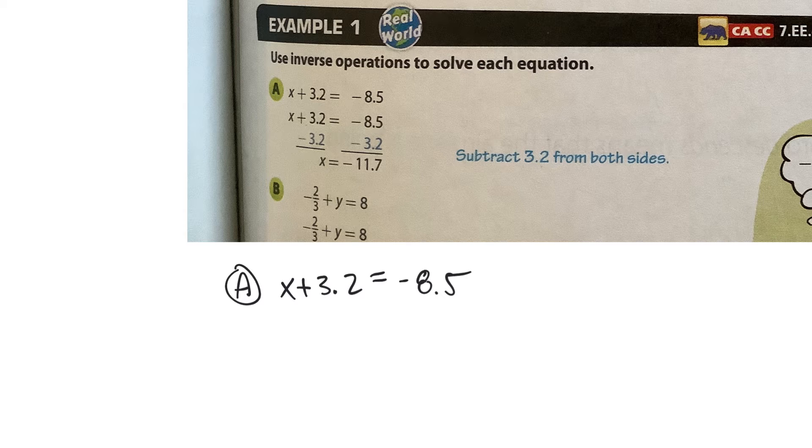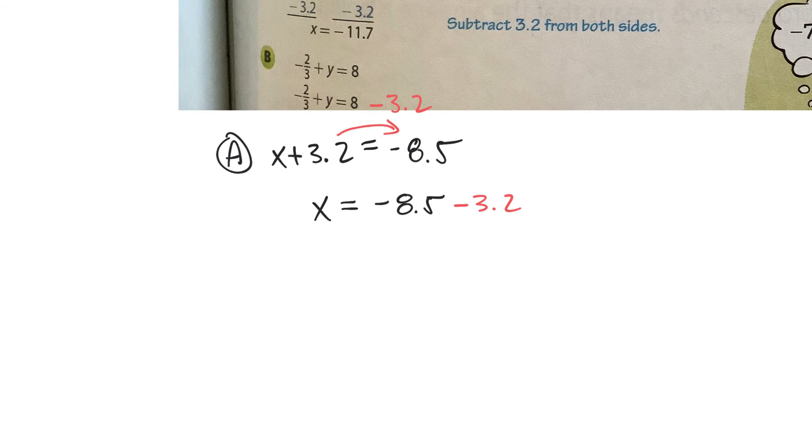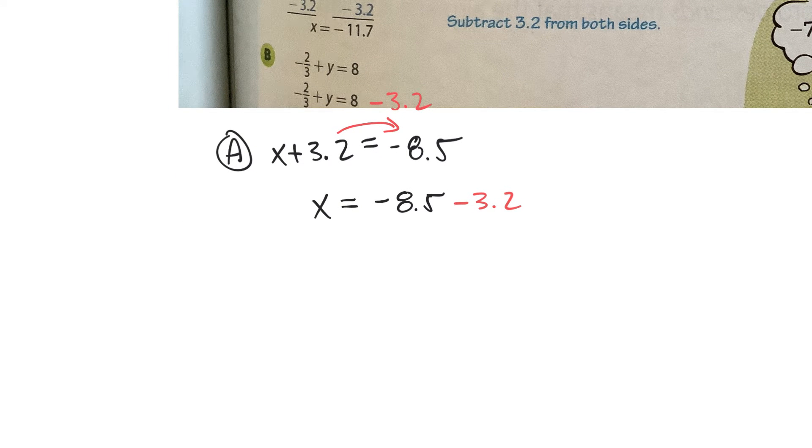So as I have this adding 3.2, I'm going to bring it to the other side as subtracting 3.2. And so what I have now is I have x is equal to negative 8.5 minus 3.2. Now, you should be good at adding these types of decimals. I see it as you've got to add them up here. So it's going to be a larger negative number, if you will. So negative 11.7.